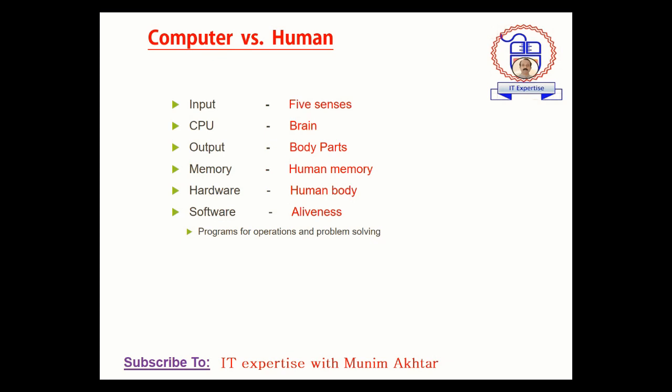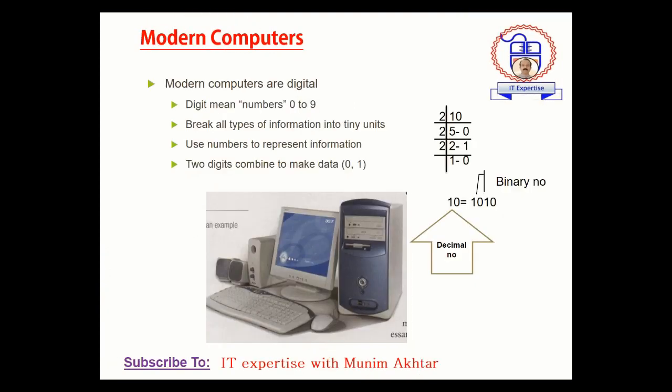Next is software. Software is the main thing which is used to run or operate the particular system. In terms of the computer, software is our programs for operations and problem solving. Actually, software is a set of codes — a set of lines that normally follow a pattern, and these lines can solve human problems easily with the help of the computer system.